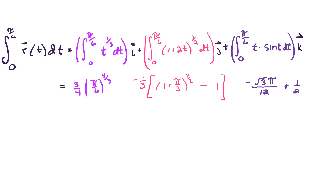So our final answer is: 3 fourths times pi over 6 to the 4 thirds power i, plus 1 third times the quantity 1 plus pi over 3 to the 3 halves power minus 1 j, plus the quantity negative root 3 pi over 12 plus 1 half k.